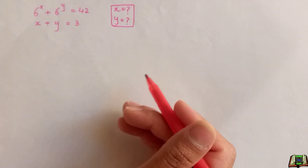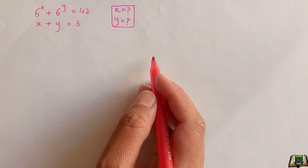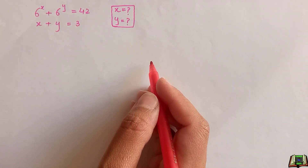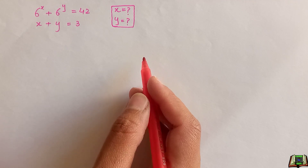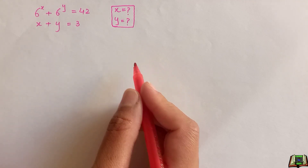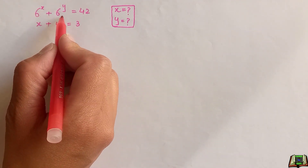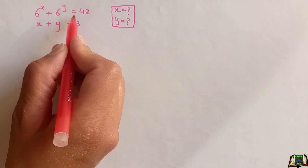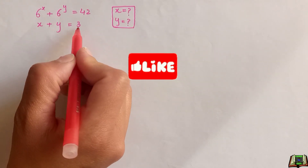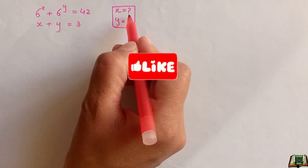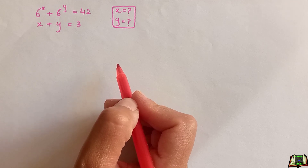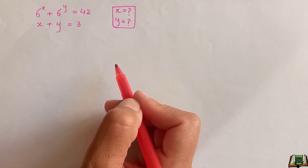Hi, hope you are doing well. In this video tutorial we are going to solve a system of equations: 6 to the power x plus 6 to the power y is equal to 42, and x plus y is equal to 3. We have to find the value of x and y using these two equations.